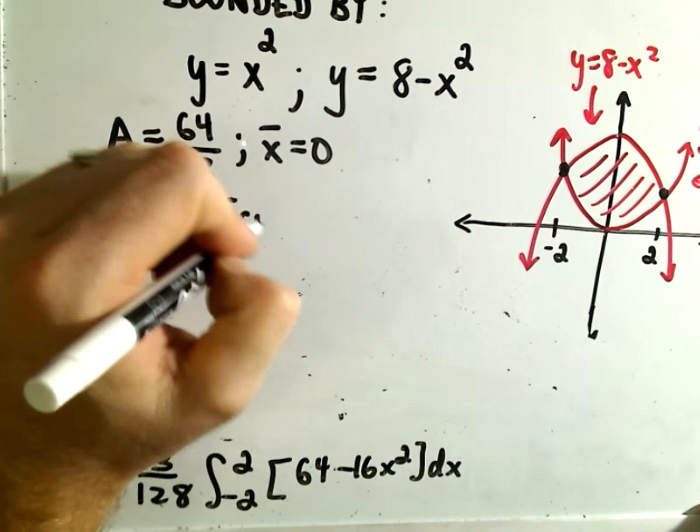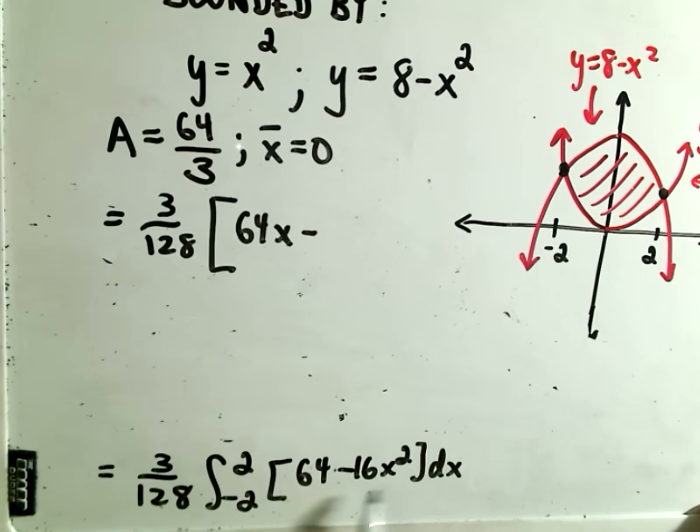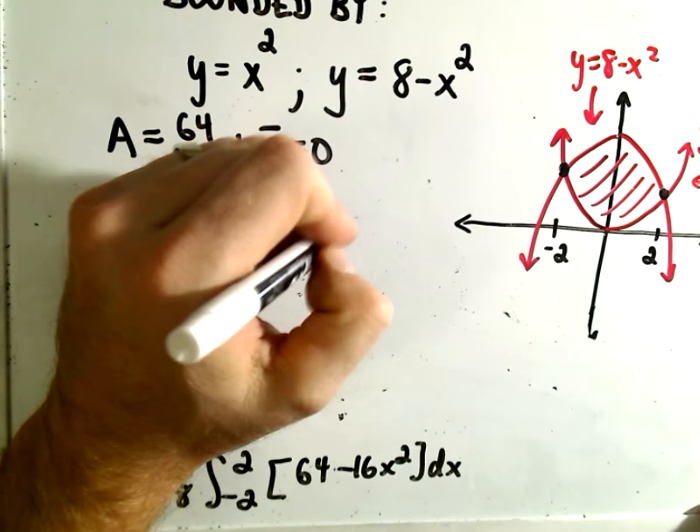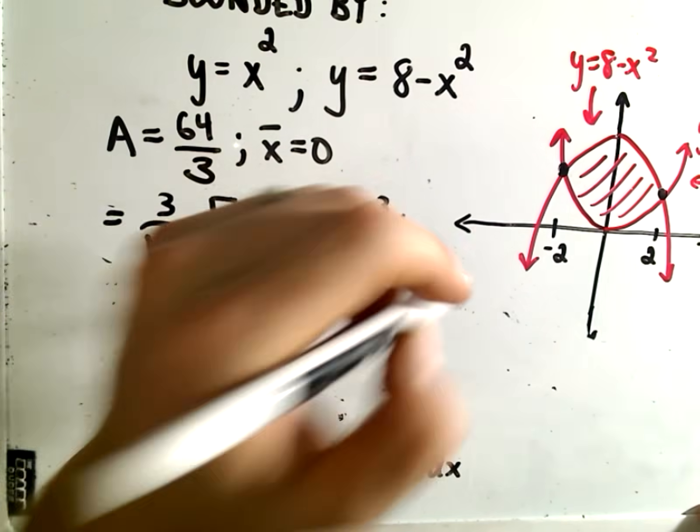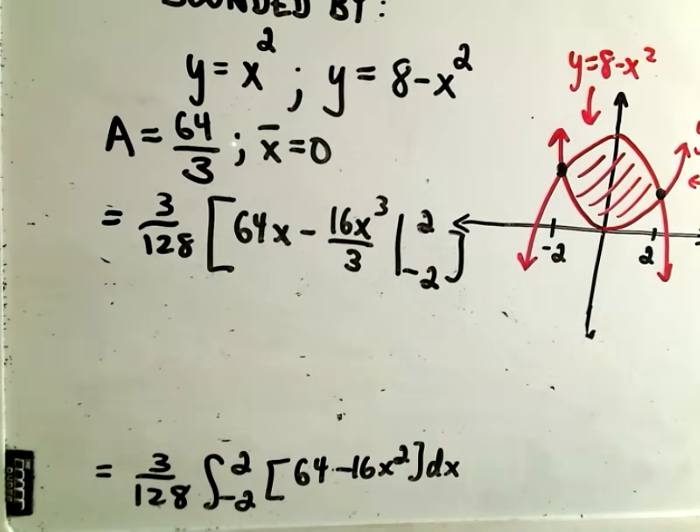We'll get 3/128. If we integrate now, 64 gives us 64x. The antiderivative of 16x² will be 16x³/3. We have to evaluate this from -2 to 2.